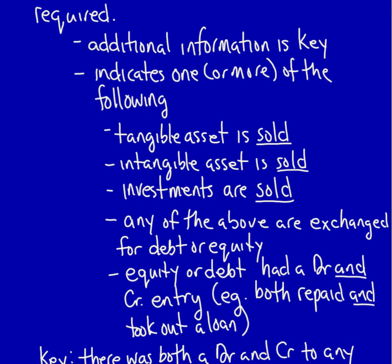Anytime you see anything that has been sold, you probably need a T-account proof. That includes the sale of a tangible asset such as property, plant and equipment, an intangible asset such as a patent or a copyright, or any investment activity — both current investments like trading investments and long-term investments — if they have been sold, you're going to need the T-account proof.